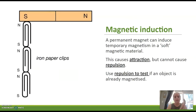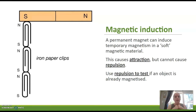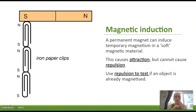Magnetic induction is taking a permanent magnet and then introducing it to a soft magnetic material — like a ferrous material like iron — and inducing that piece of iron to have a magnetic induction. So if you rub a magnet over a paper clip, you can actually induce that paper clip into being itself a temporary magnet. This temporary magnetism only works as an attraction — it does not work as a repulsion.